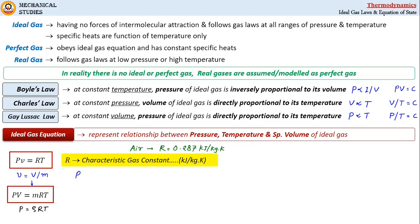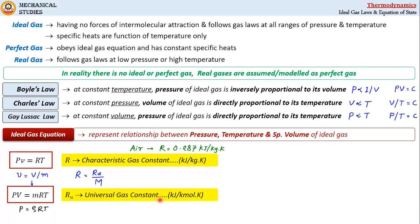The characteristic gas constant can be found from the universal gas constant and the molecular weight of the gas as R = Ru / M, where R is the characteristic gas constant, M is the molar mass or molecular weight of the gas, and Ru is the universal gas constant. Ru has units of kJ/(kmol·K) and its value is 8.314 kJ/(kmol·K).